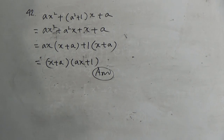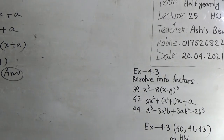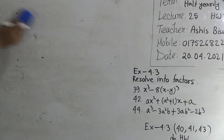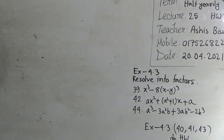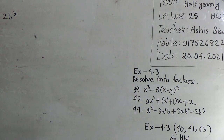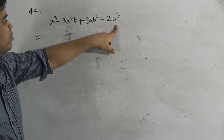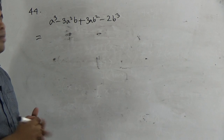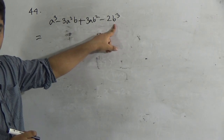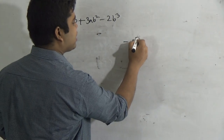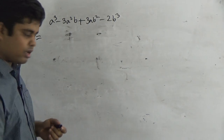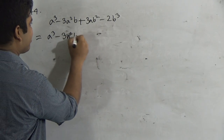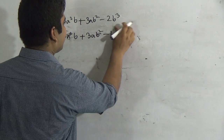Our last question of this lecture is question number 44. It is very important for your annual term. The expression is: a³ minus 3a²b plus 3ab² minus 2b³. Notice that to apply the formula we need minus b³, but here we have minus 2b³. So we can write minus 2b³ as minus b³ minus b³. We rewrite: a³ minus 3a²b plus 3ab² minus b³, and minus b³.